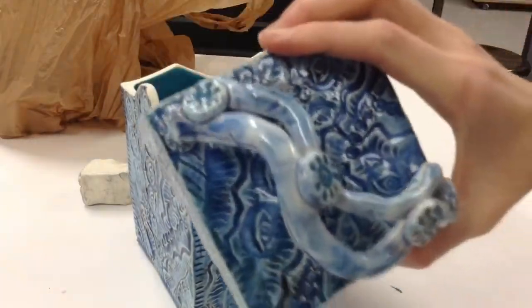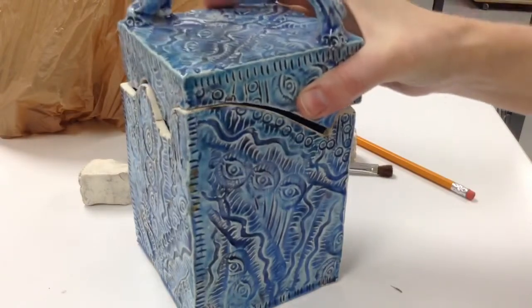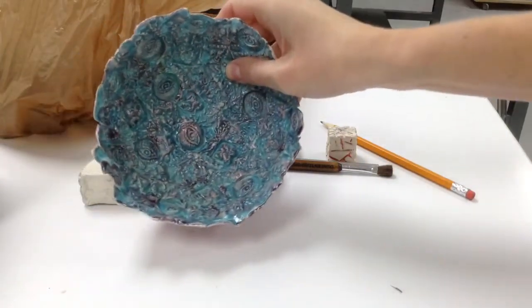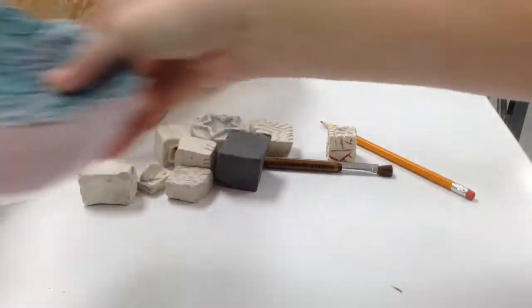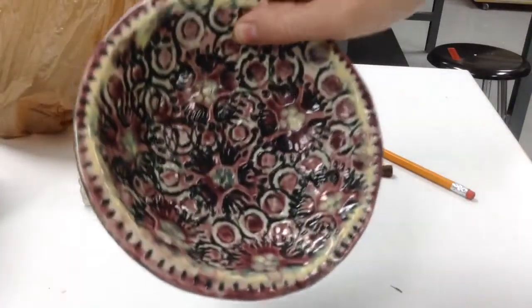So the boxes that you make later have really interesting textures. You can use stamps for those. You can apply them to the inside of bowls or the outside of bowls. There's one more sample.